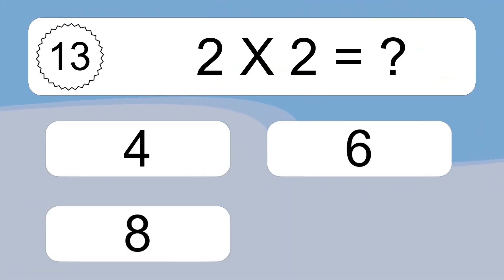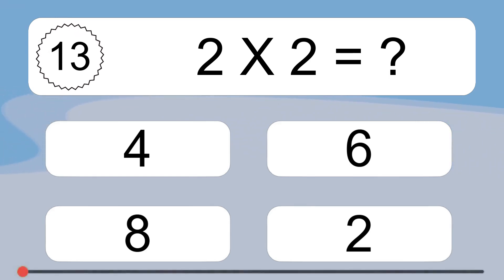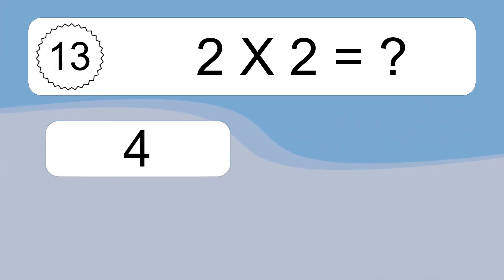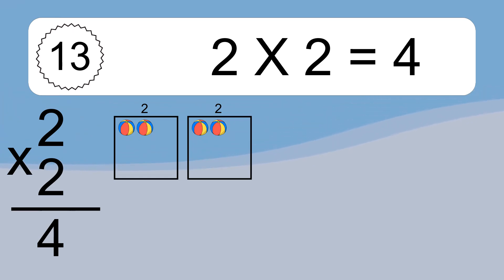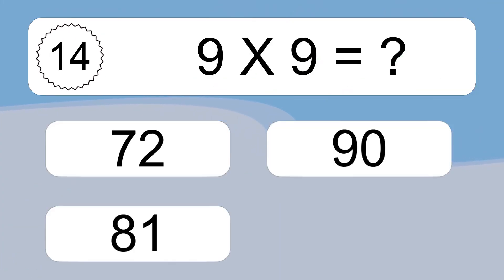2 x 2 equals 4. We have 2 boxes, and each box has 2 colorful balls inside. If you count all the balls and all the boxes together, you will have 2 x 2 balls. This equals 4 balls.